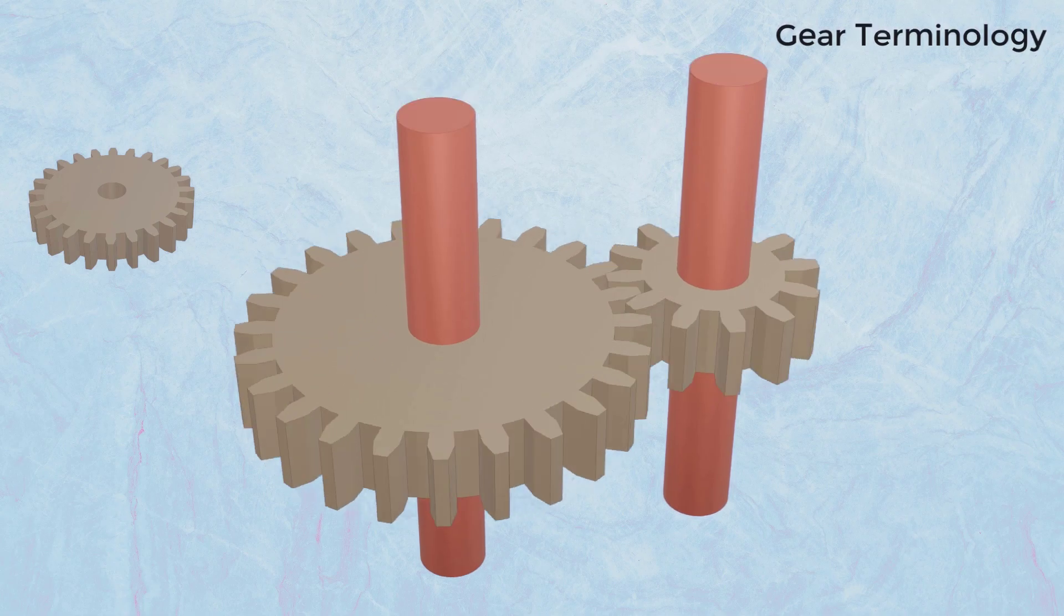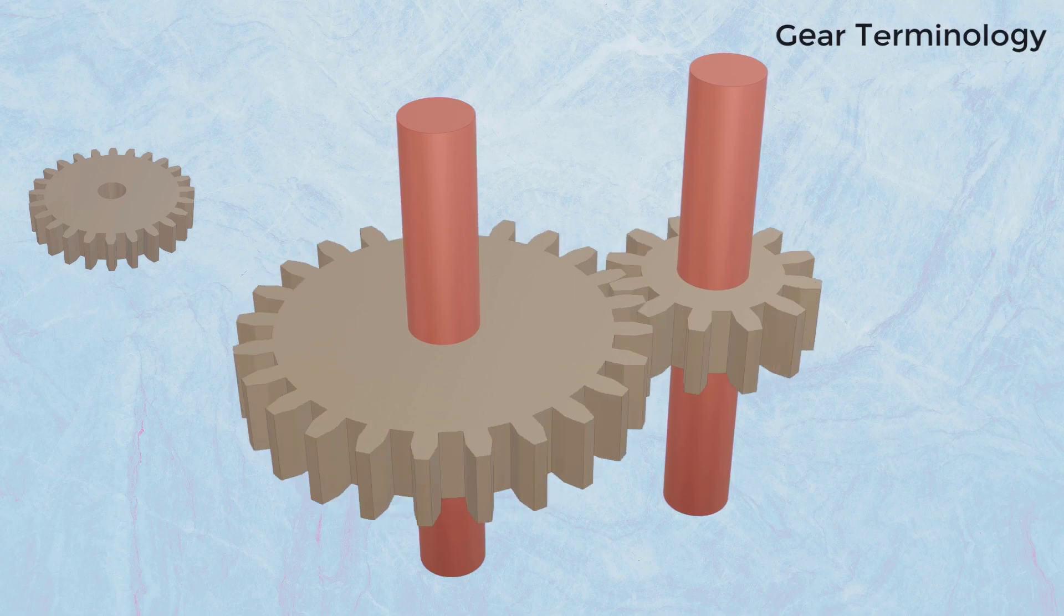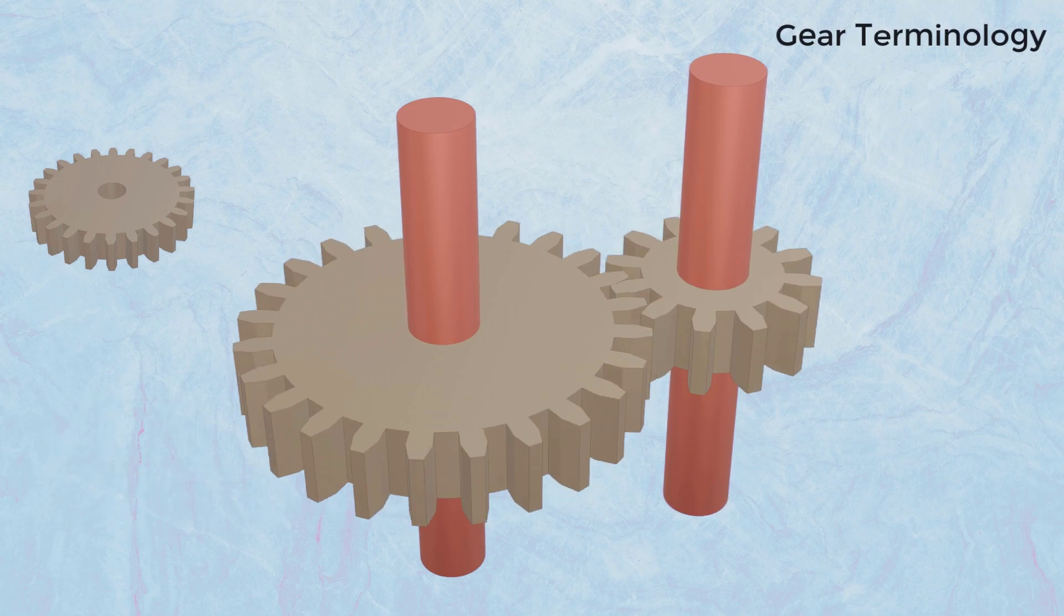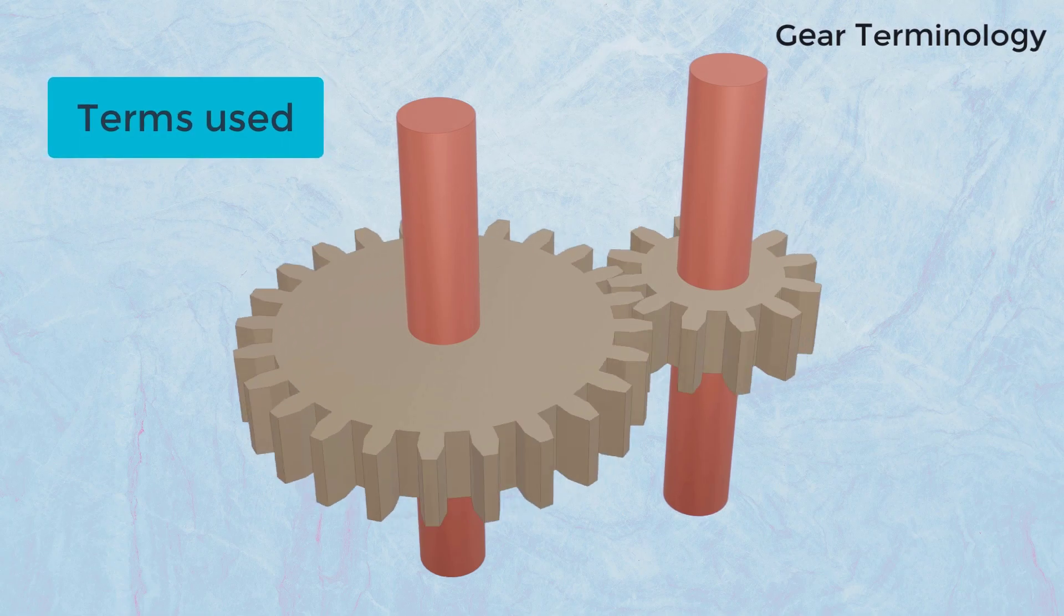Gears are used to transfer motion and torque between machine elements. Depending on the construction, gears can change the direction of movement or increase the output speed or torque. In this video, we will understand the terms used to represent different parameters of gear.